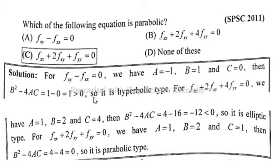Option B: f_xx plus 2f_xy plus 4f_yy equals 0. Here f_xx means A equals 1, f_xy means B equals 2, and f_yy means C equals 4.